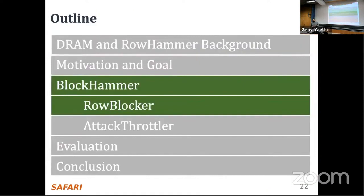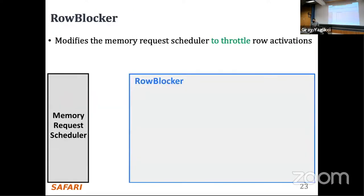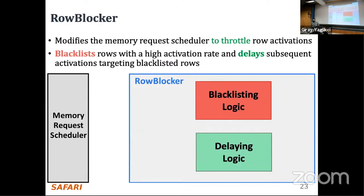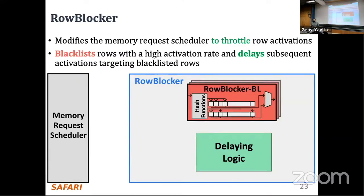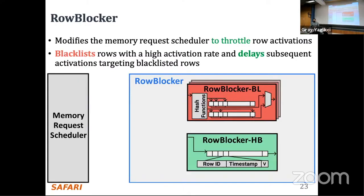Row Blocker modifies the memory request scheduler to throttle row activations that could lead to bitflips. It blacklists rows with high activation rates and delays subsequent activations targeting them. We call the blacklisting logic Row Blocker BL (blacklist) and the delaying logic Row Blocker HB (history buffer).